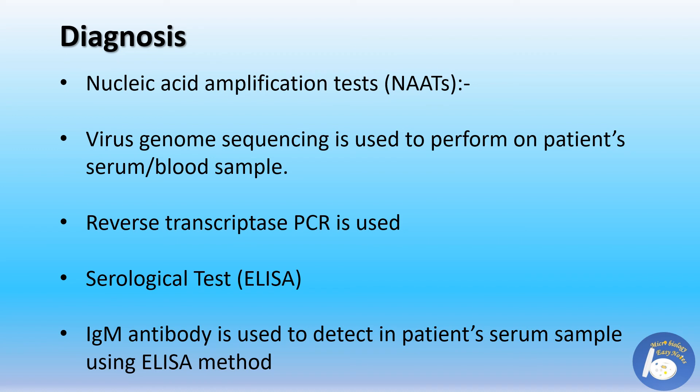Several methods can be used for the diagnosis of dengue, depending on the patient's condition. The first method is reverse transcriptase polymerase chain reaction (RT-PCR), which amplifies the RNA of the virus present in the patient's blood sample or serum sample.